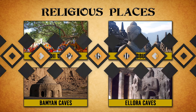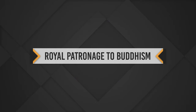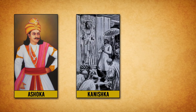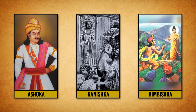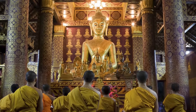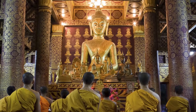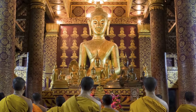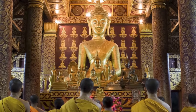Buddhism was followed by many emperors in the past. Emperor Ashoka Maurya, Kanishka, and ruler of Magadha, Emperor Bimbisara from India, and countries like Laos, Cambodia, Tibet, Thailand and some parts of China, Japan and Malaysia gave royal patronage to Buddhism.